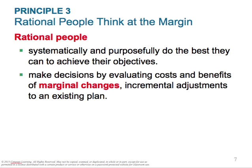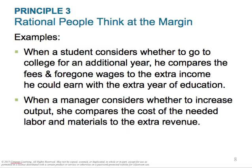Principle three: rational people think at the margin. Rational people systematically and purposefully do the best they can to achieve their objectives. They make decisions by evaluating costs and benefits of marginal changes, which are incremental adjustments to an existing plan. For example, when a student considers whether to go to college for an additional year, he compares the fees and foregone wages — the opportunity cost — to the extra income he could earn. Similarly, a manager considering whether to increase output compares the costs of needed labor and materials to extra revenue.